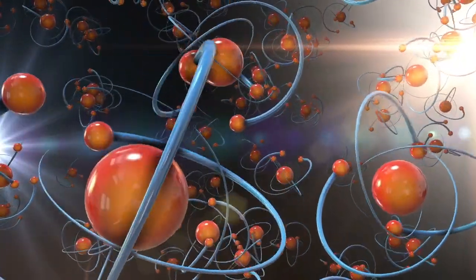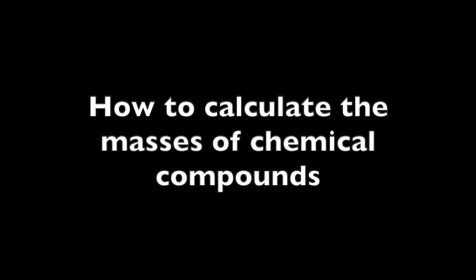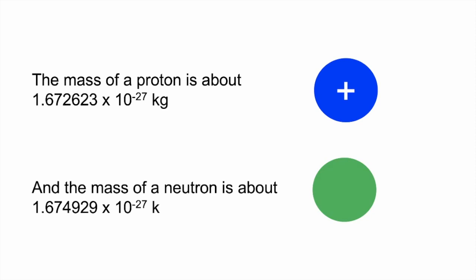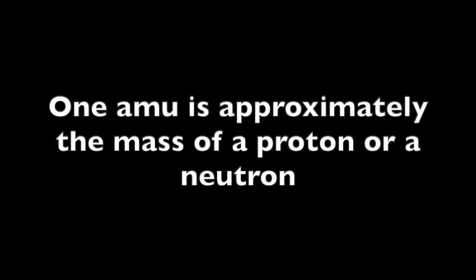In this video we will be talking about how to calculate the masses of chemical compounds. Let's start with a little review. This is the mass of a proton and this is the mass of a neutron. These numbers are very awkward to use because of the exponents. Fortunately chemists use a different unit of measurement called the atomic mass unit. One atomic mass unit, or one AMU, is approximately the mass of a proton or a neutron.